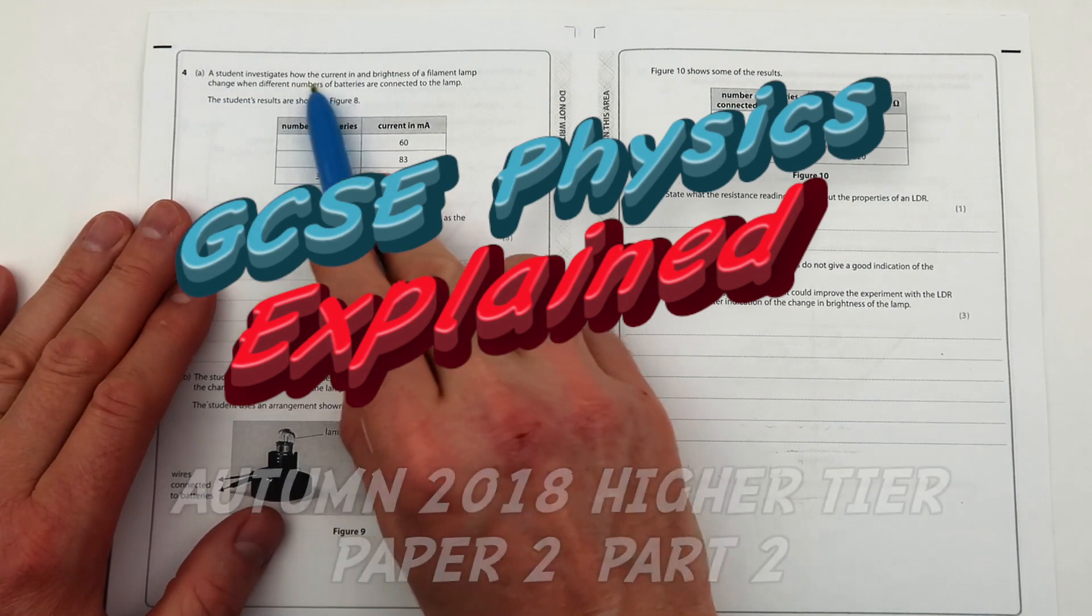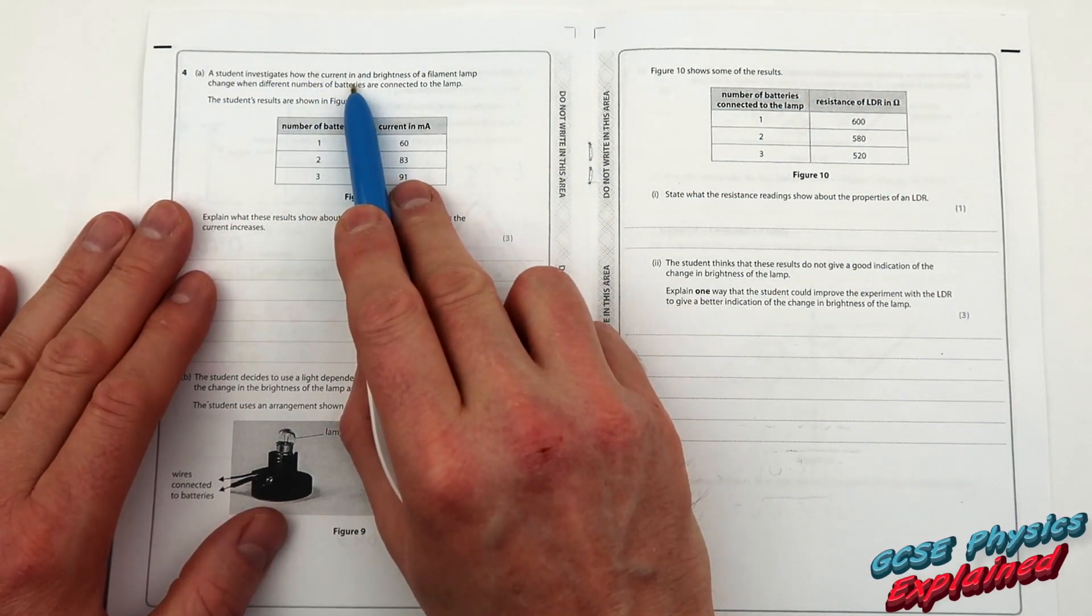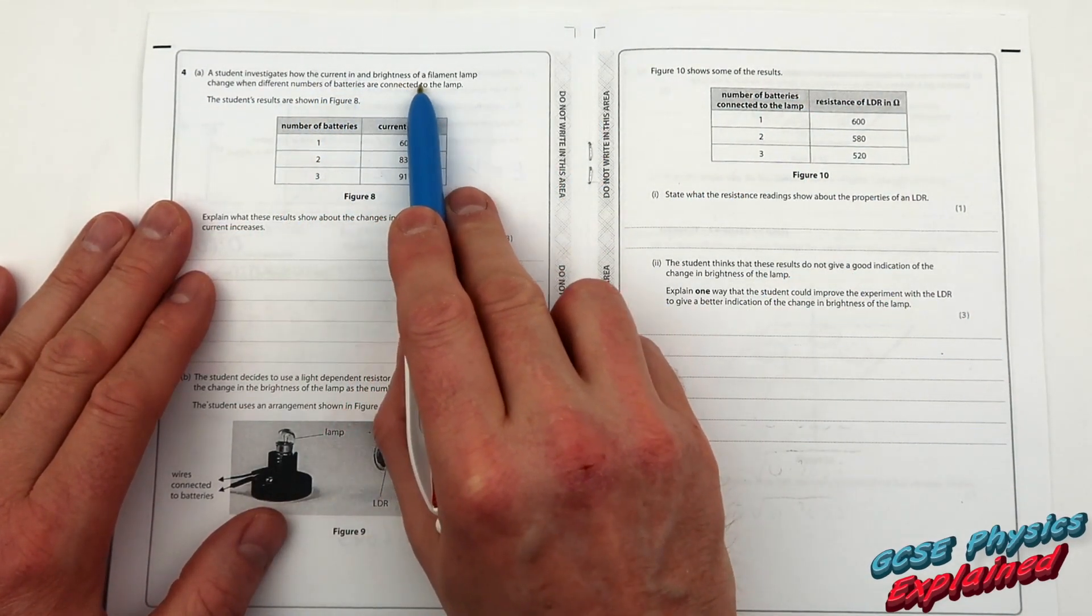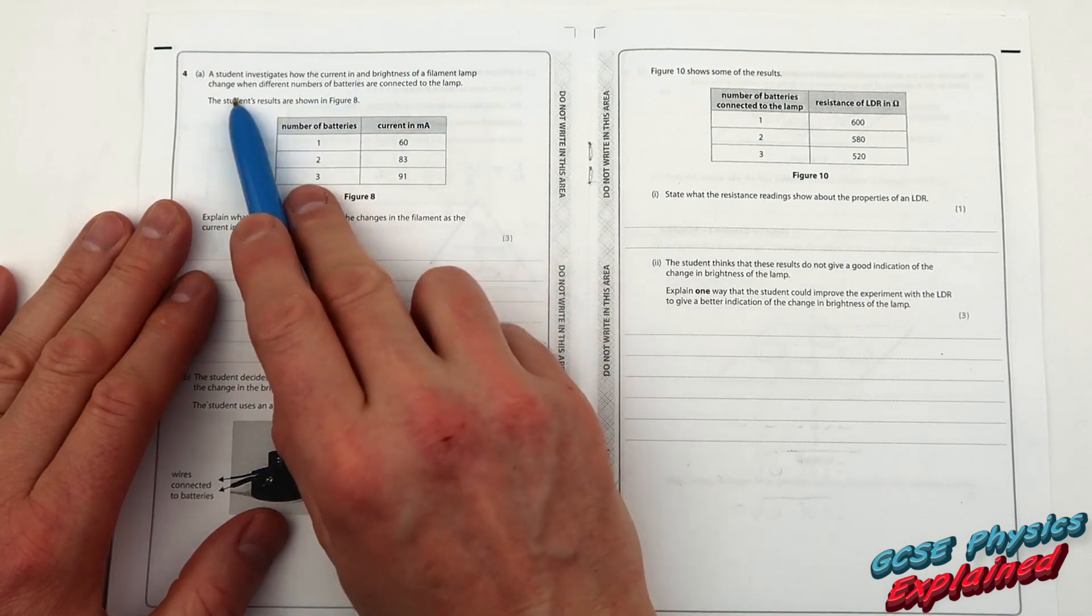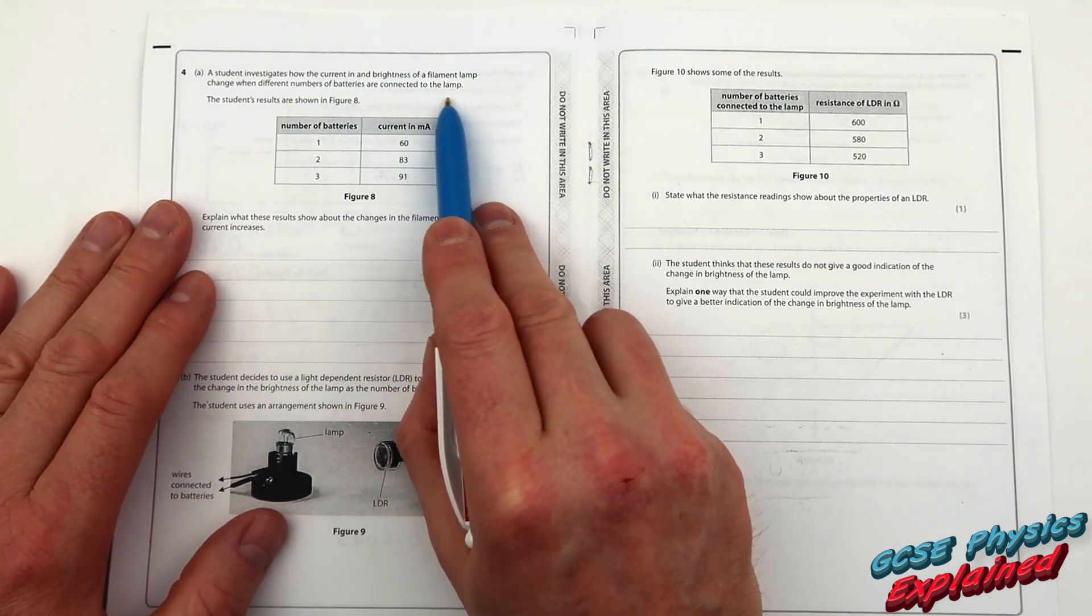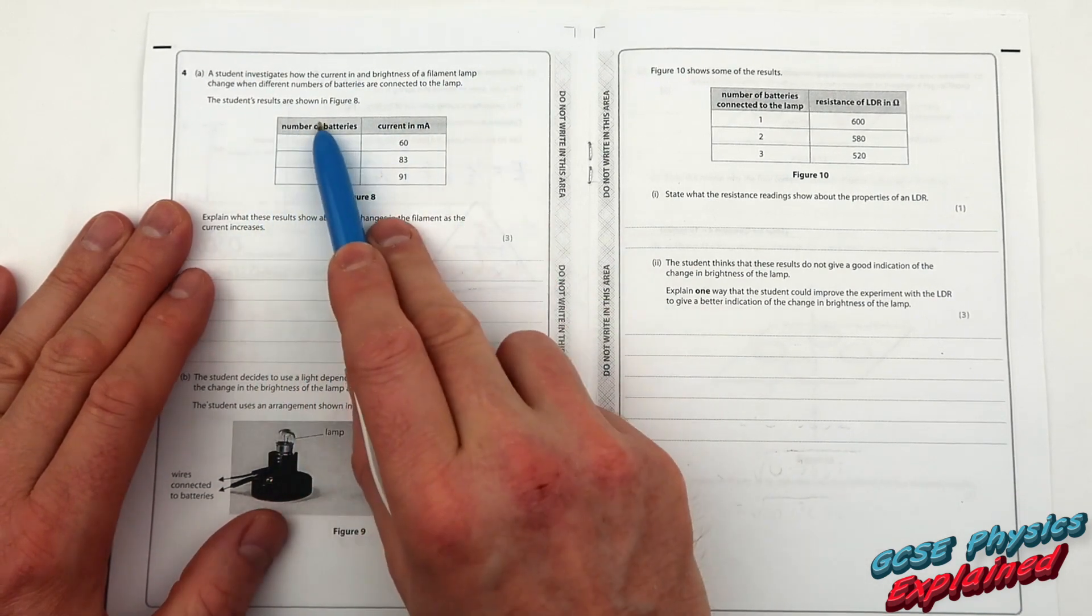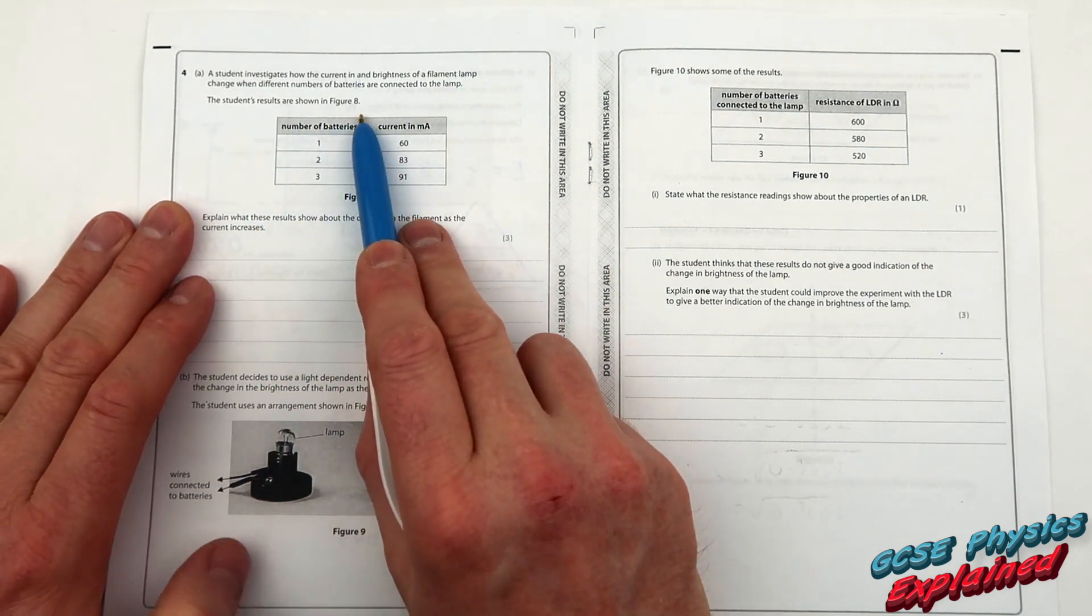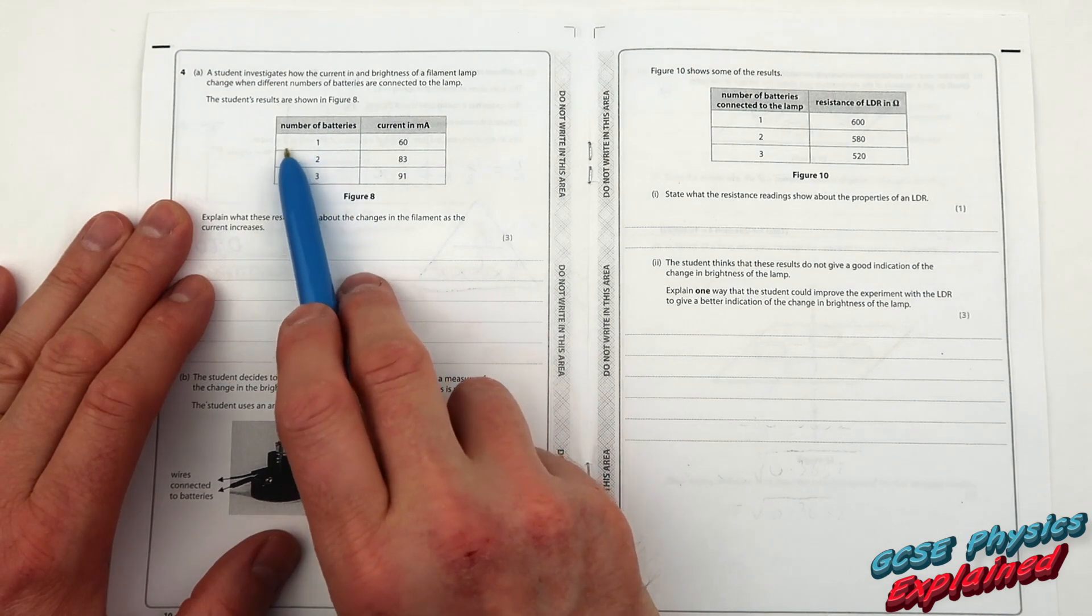Question 4. The student investigates how the current in and brightness of a filament lamp change when different numbers of batteries are connected to the lamp. The student's results are shown in figure 8.